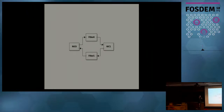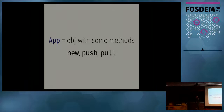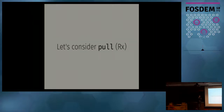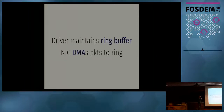A SNAB app is really just a Lua object that has a particular set of methods — for example, a new method which does initialization for the app, and push and pull methods which do things like receive and transmit for a particular app. So a driver is also just an object with some methods. In particular, let's consider the pull method, which is the part that implements the receive functionality. The driver maintains a ring buffer — the descriptor ring — and the NIC uses DMA to send packets via the descriptor ring into the memory allocated by the driver.